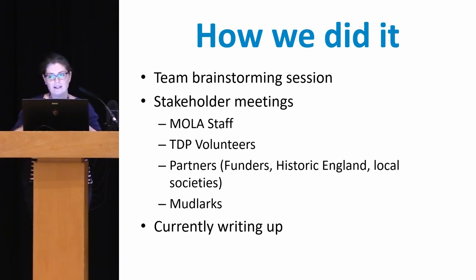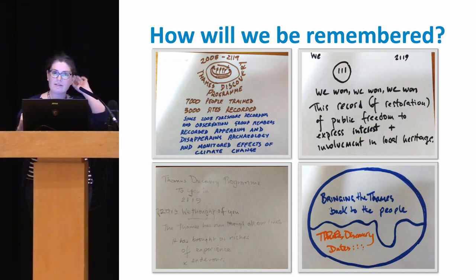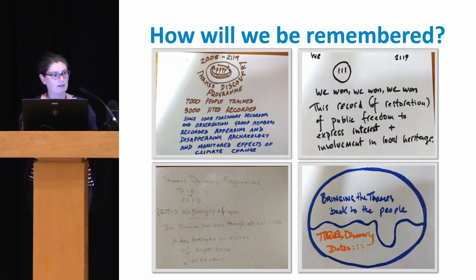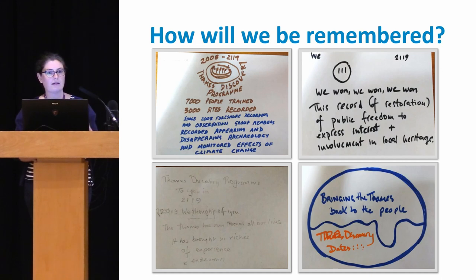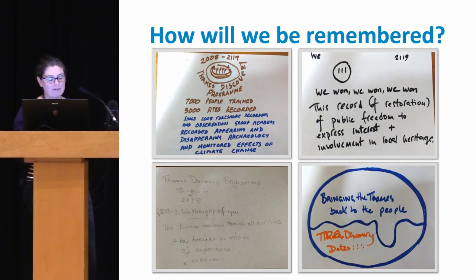One activity that was really lovely: we asked people how they thought the project might be remembered. We said, 'Imagine in 100 years' time, they're going to erect a plaque to commemorate the Thames Discovery Programme — what will that plaque say?' There were some really lovely responses that helped us understand people's idea of the long-term impact. For instance, one said: 'We trained 7,000 people' — which we might do in 100 years — '3,000 sites recorded since 2008, foreshore recording and observation group members recorded appearing and disappearing archaeology and monitored the effects of climate change.'